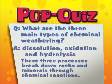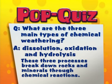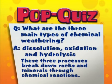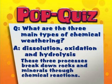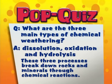Here comes the answer to the pop quiz. The question was: what are the three main types of chemical weathering? The correct answer is dissolution, oxidation, and hydrolysis. These three processes break down rocks and minerals through chemical reactions.